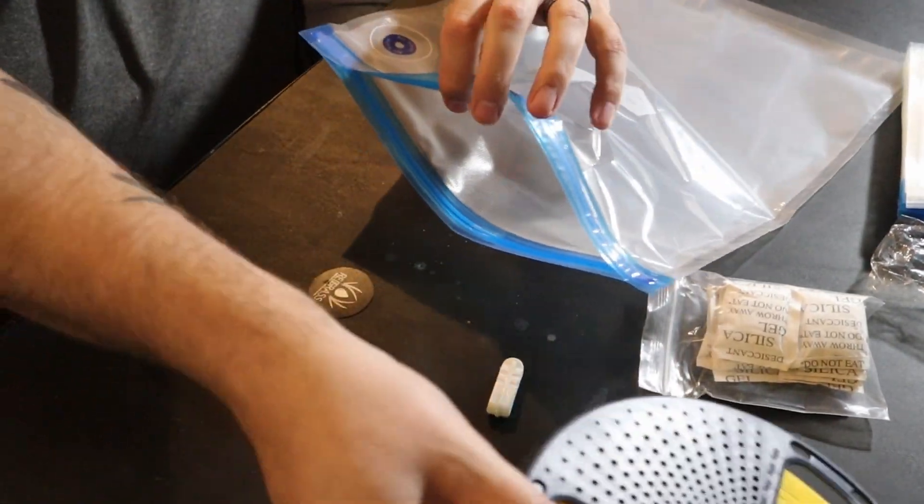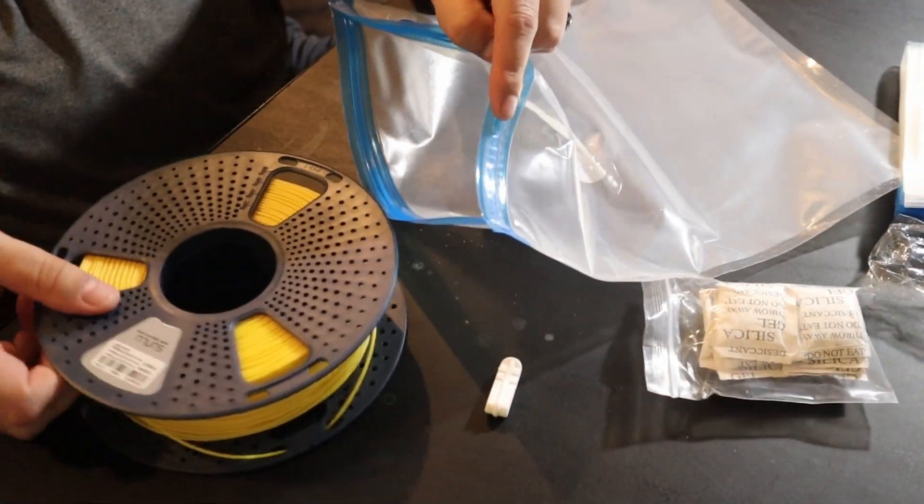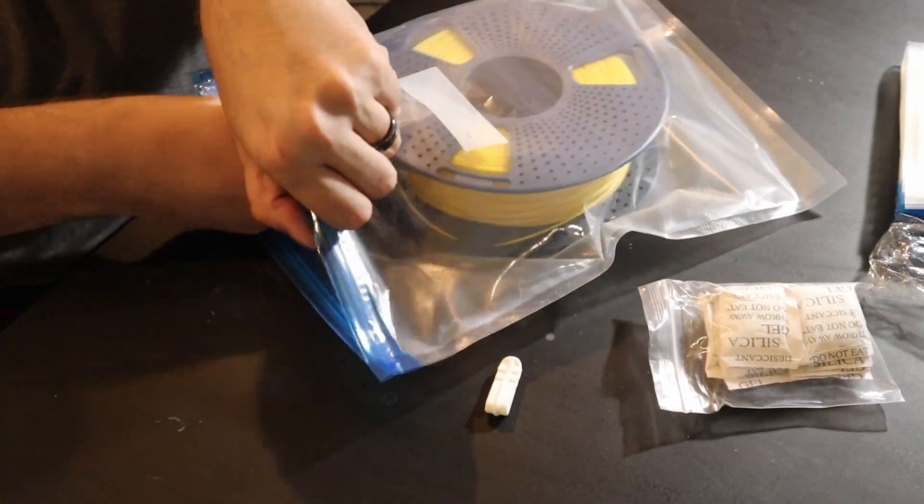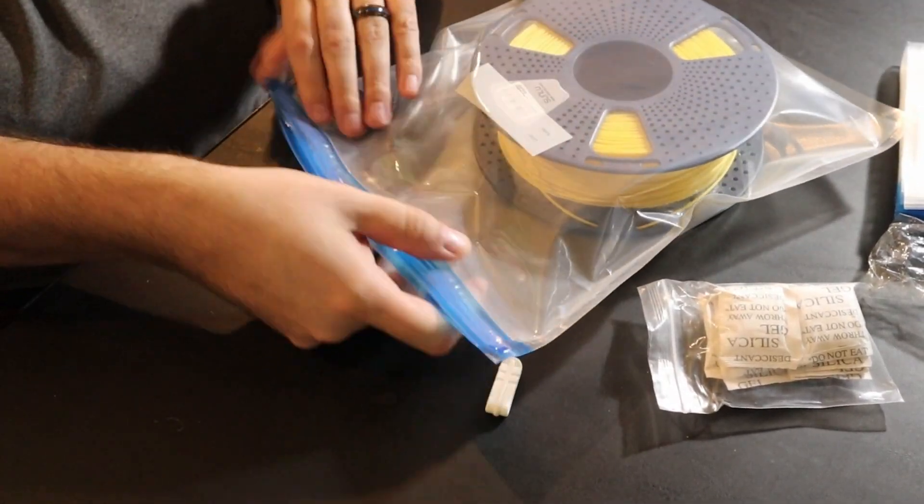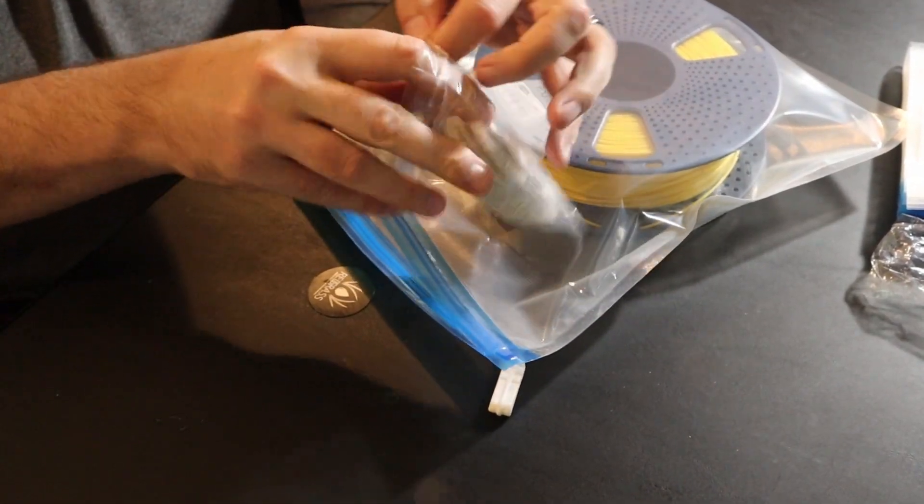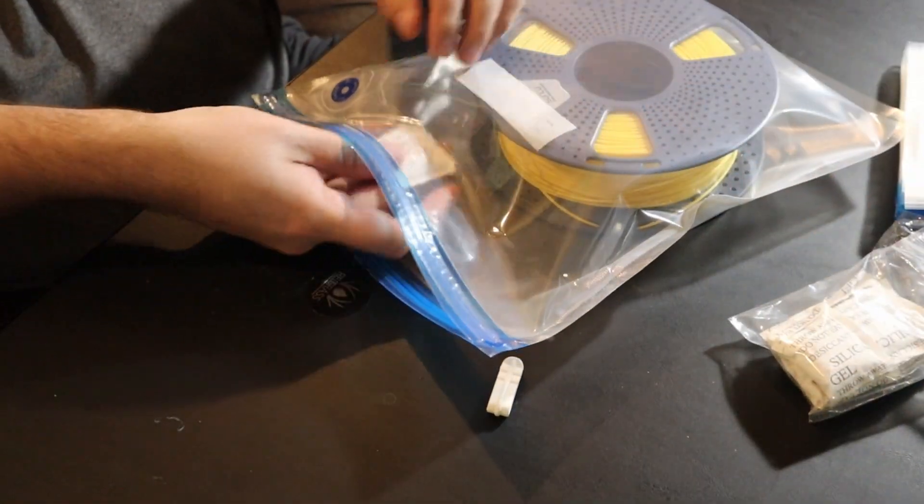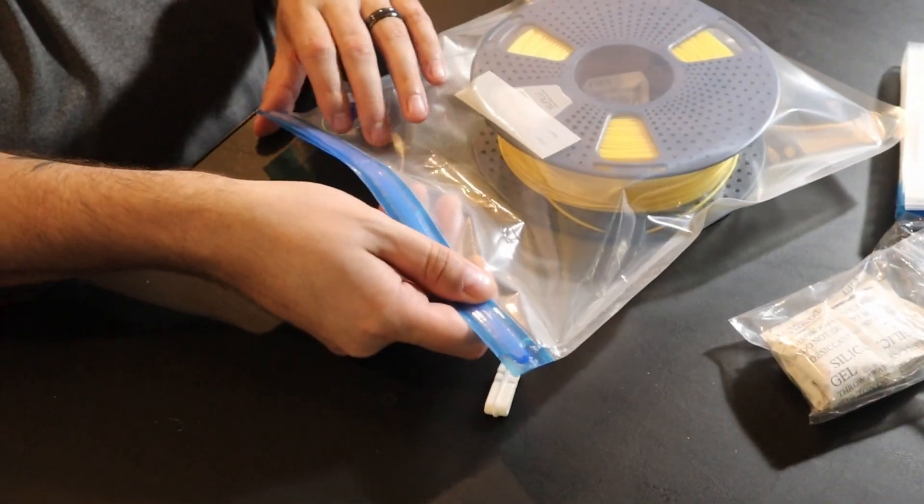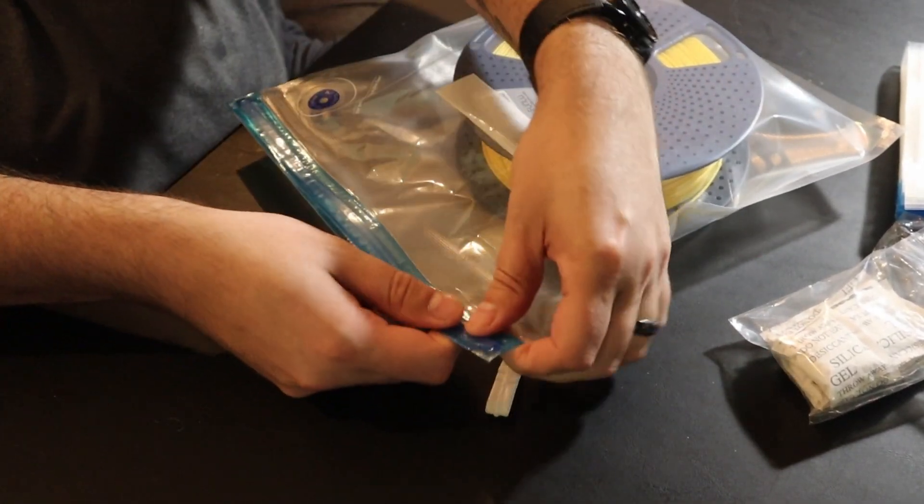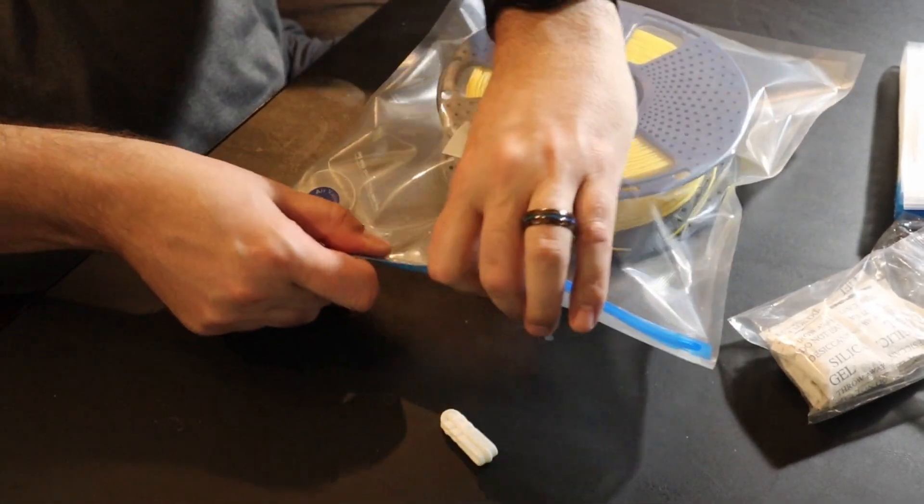I still might go the vacuum sealing route. It's just that seems like a lot of work to get your roll and cut it and all that stuff. I can just get bags like this and put one of these silica packets in here too. You can leave some comments if you want to see me test out some other things. I'm more than open to do some testing.